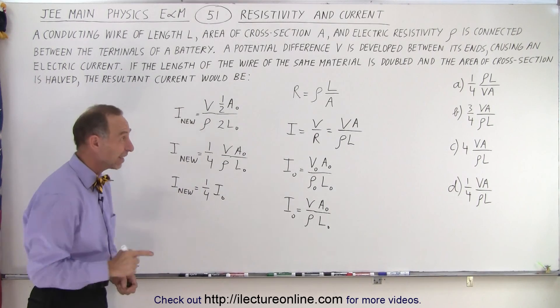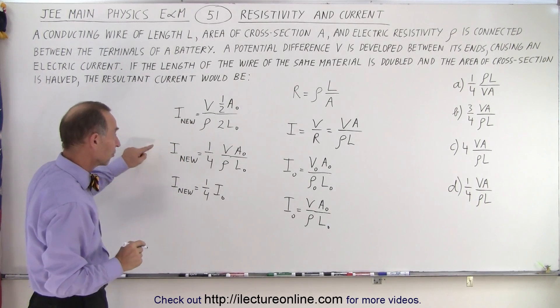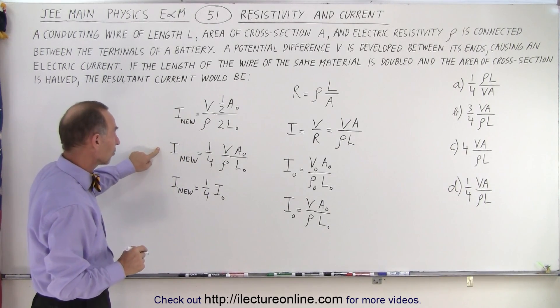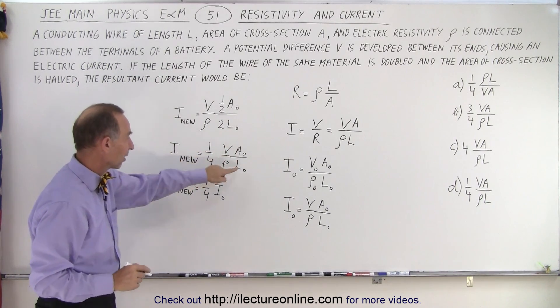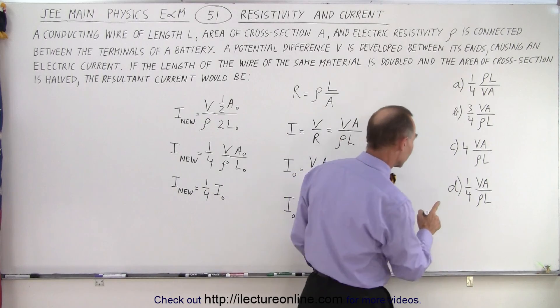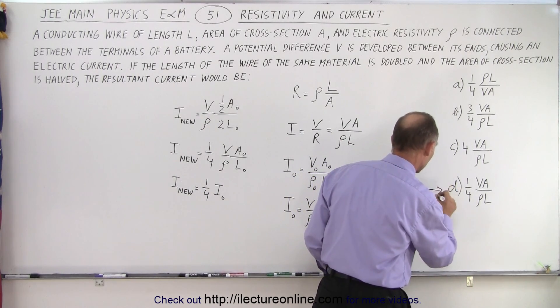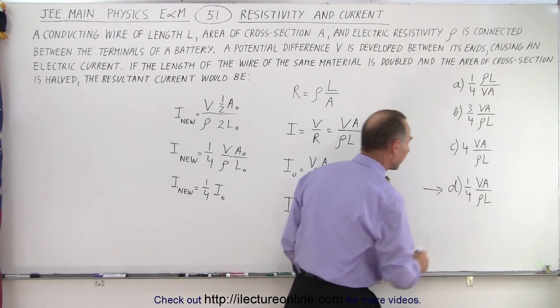Now let's see which of those four answers gives us this. It looks like we have this exactly the same as answer D right here, because it's one-quarter V A over rho L.